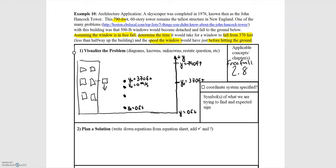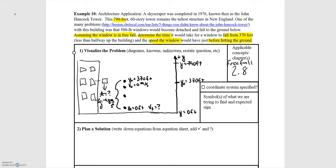The final position is when the window hits the ground, so the final position yf is equal to zero feet. We want to know the speed just before hitting the ground, so we don't know the final velocity yet. We're not given any information about time, but we do know the window is in free fall, which means its acceleration will be negative 9.8 meters per second squared. Time is a question mark at this point.